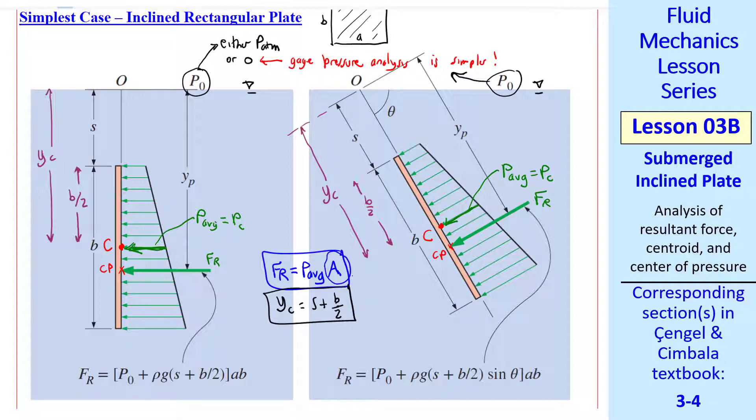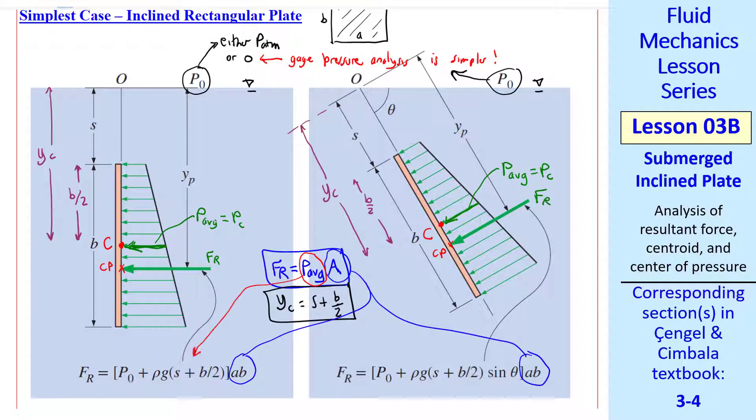For a rectangular plate, A is just AB, and that's true for either case. And P average, for the vertical case, is P naught plus rho g times YC. For the vertical plate, this represents the depth from the surface to point C.